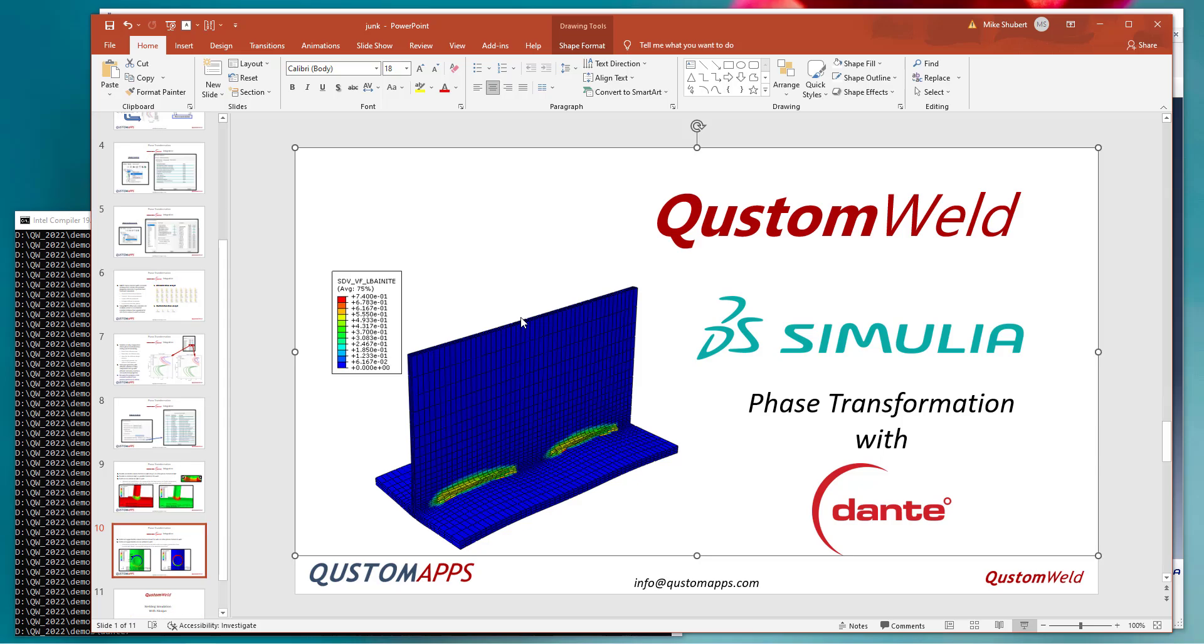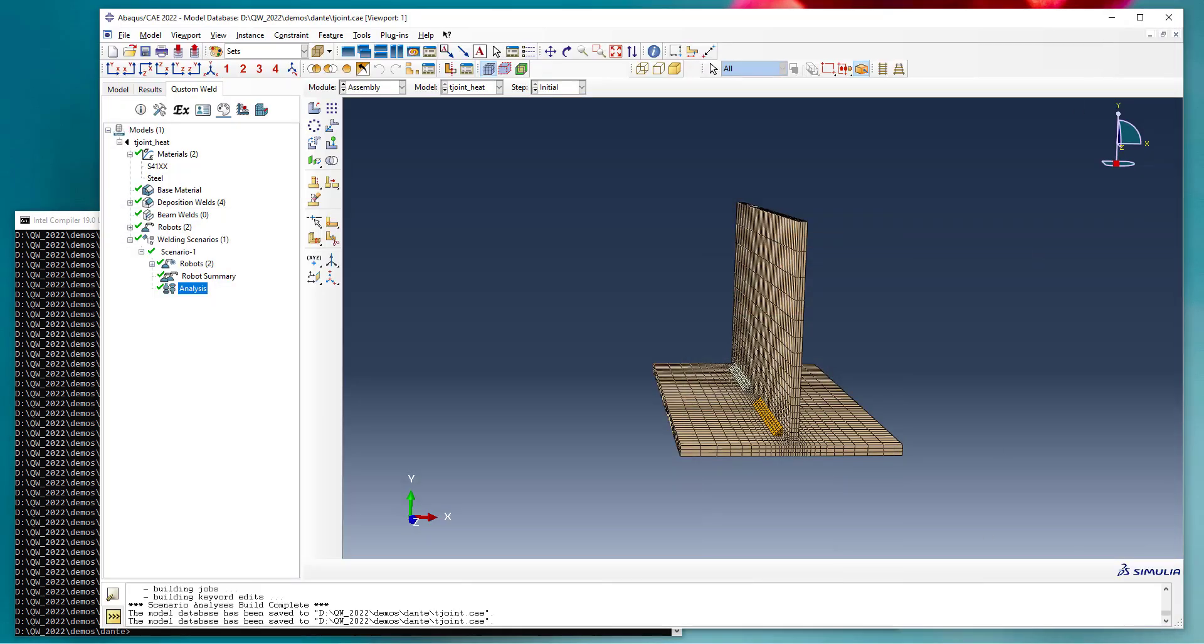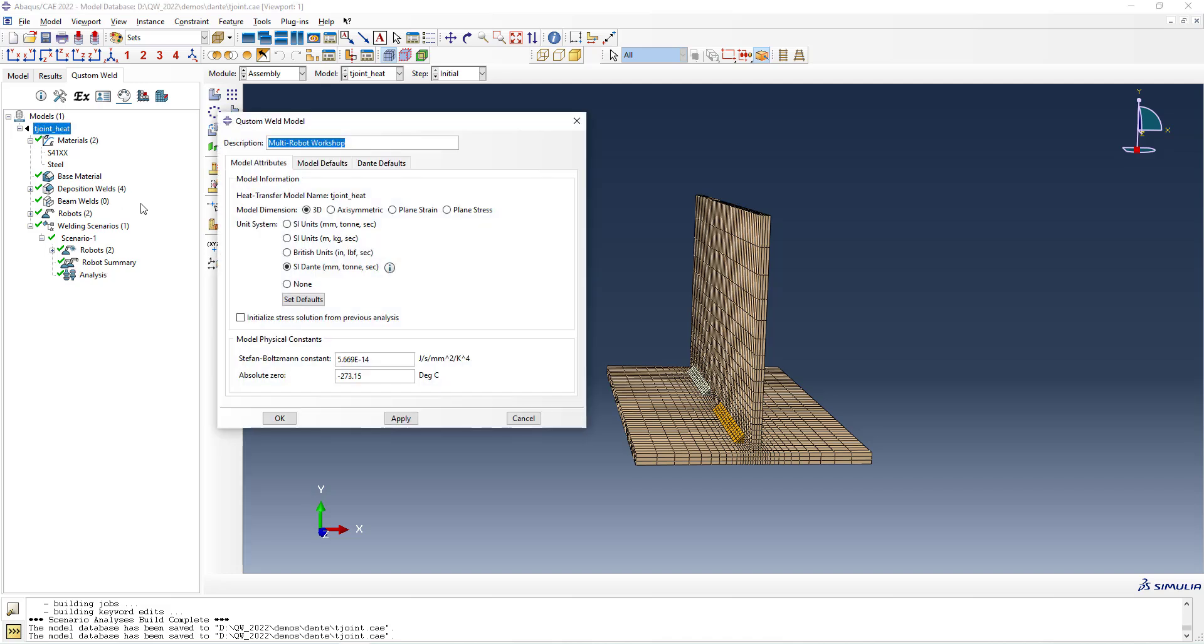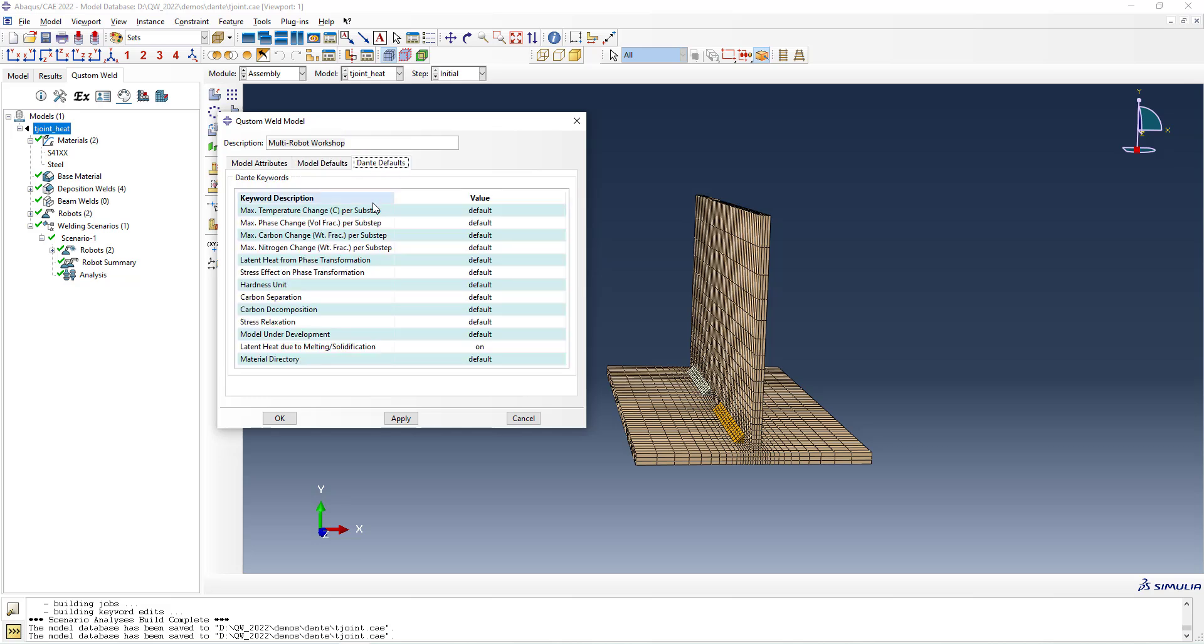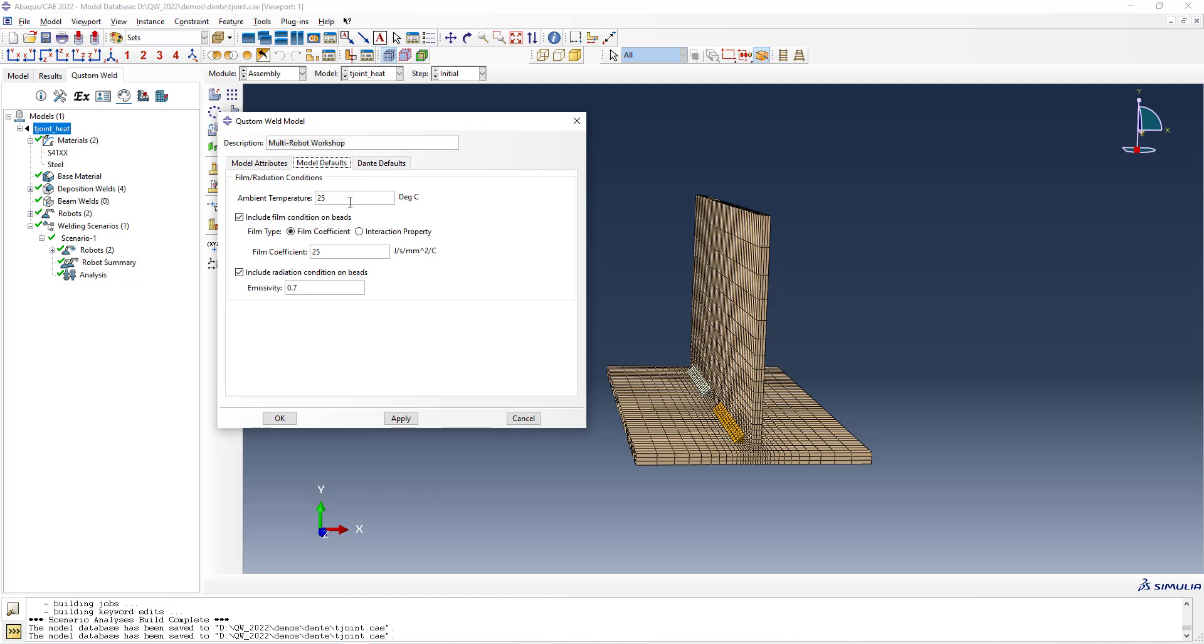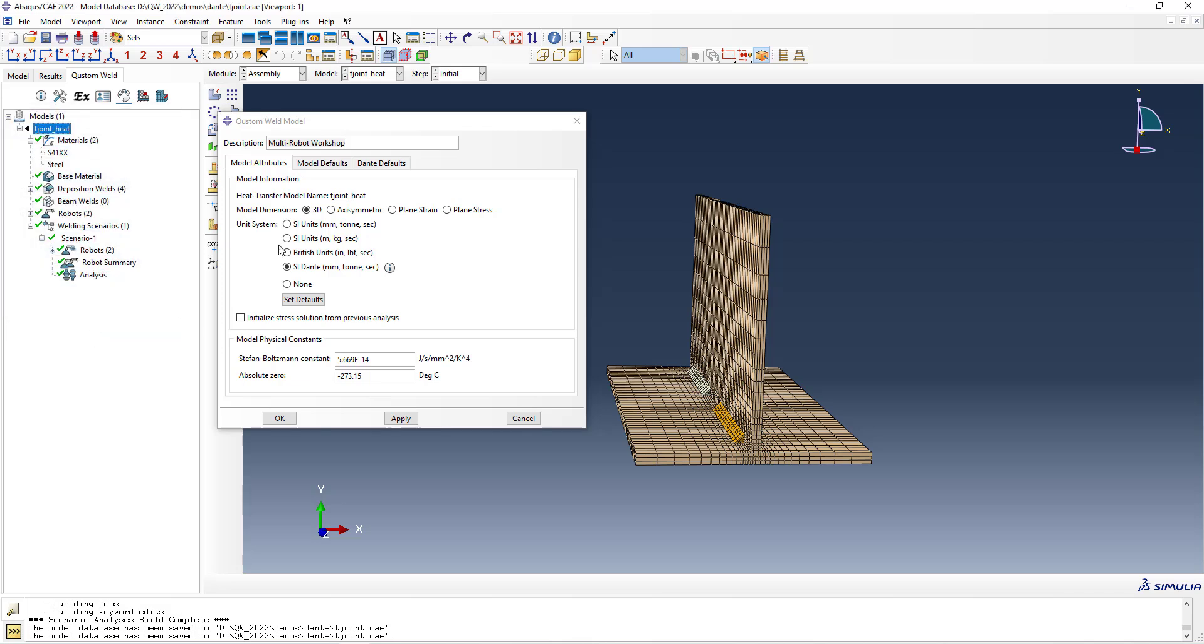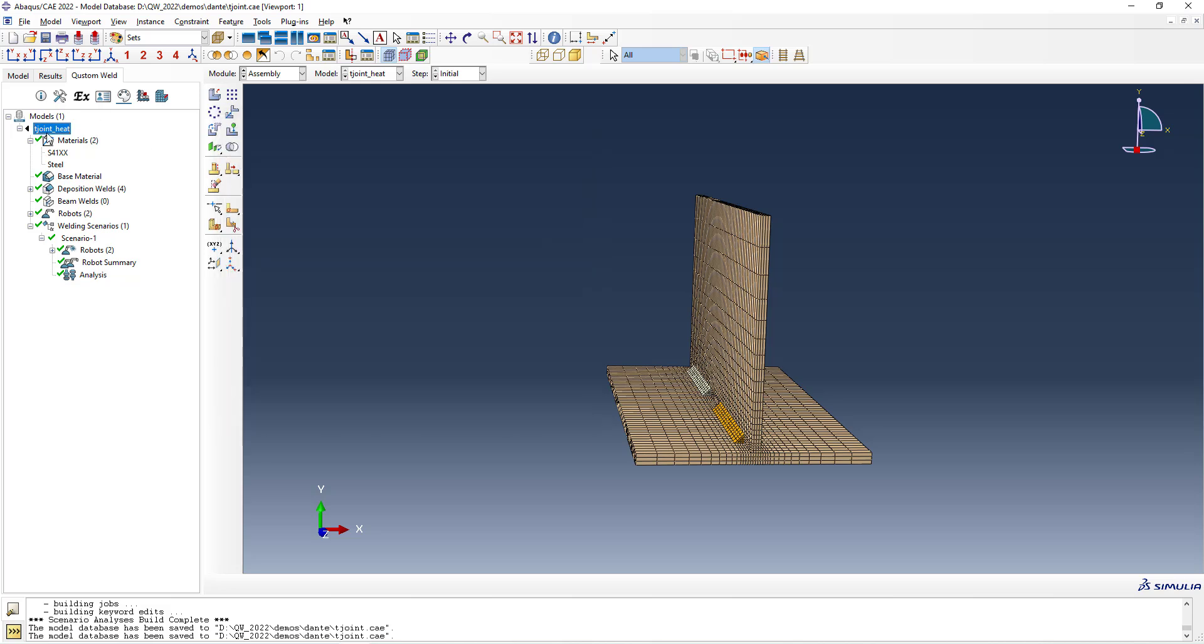So let's actually look at what one of these models would look like inside of custom weld. So here's that one of those examples that we had just looked at. So the first item up here is we choose under model attributes. We say we're going to use Dante materials and Dante's only got one set of materials. So when we select that, that's where we can set in the keywords. And then we have to be consistent with our default film and radiation conditions. You can look at this just to get a summary of the units that Dante uses. So that's the first step.